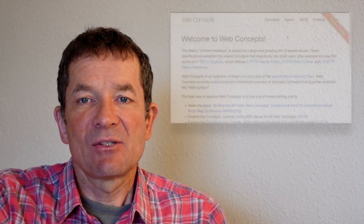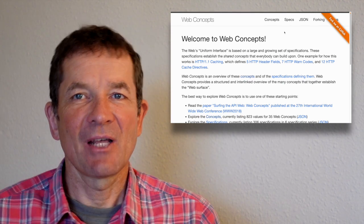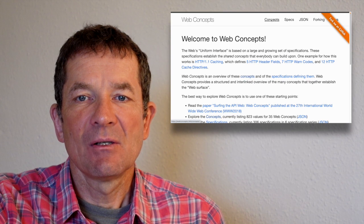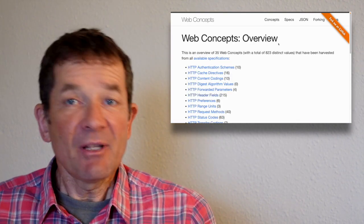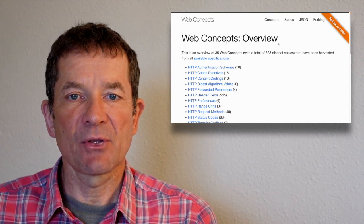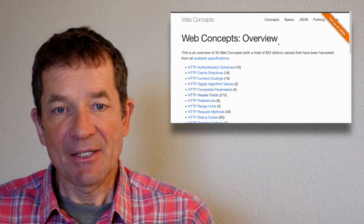There is, I think for some, a surprising number of these building blocks around, and this number is constantly growing. It's something that I like to collect and list on this web page that I've created that's called Web Concepts. So right now this website is listing 35 different concepts that matter for APIs, and for those 35 different concepts there are 823 different values.